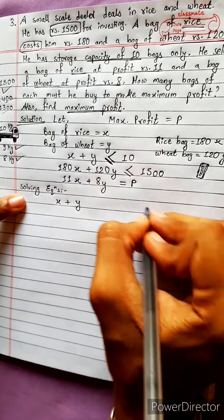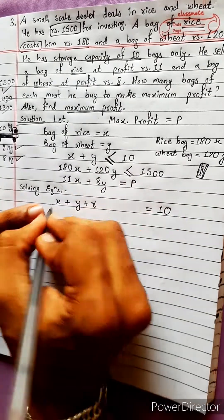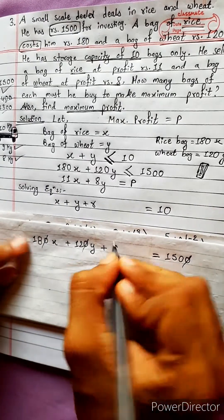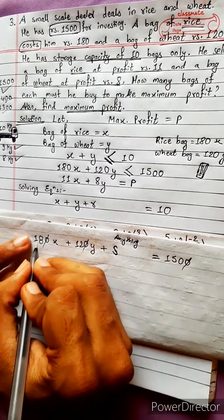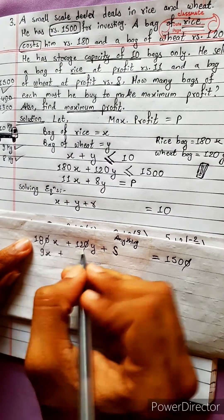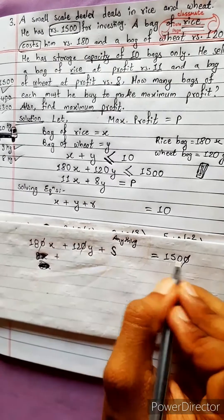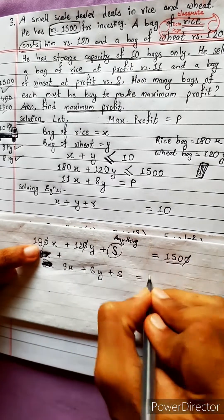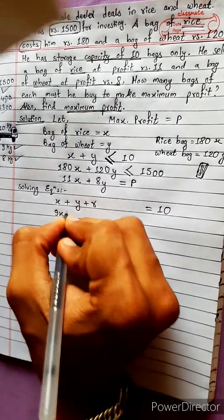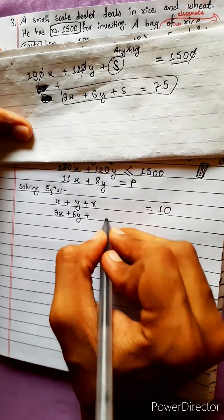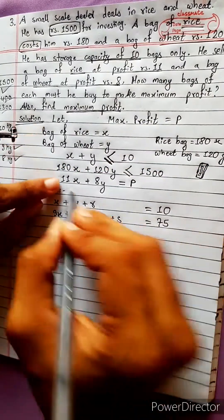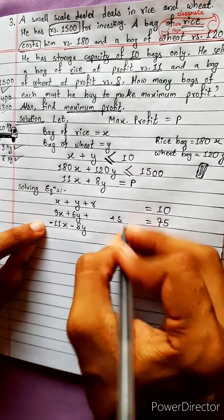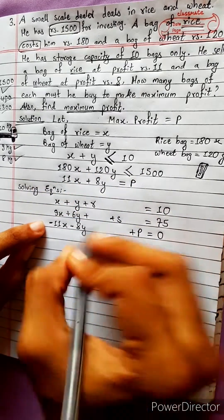x plus y is less than or equal to 10. This is the slack variable — now we have a constant. The equation 9x plus 6y plus s equals 75. The objective row is: minus 11x minus 8y plus P equals 0.